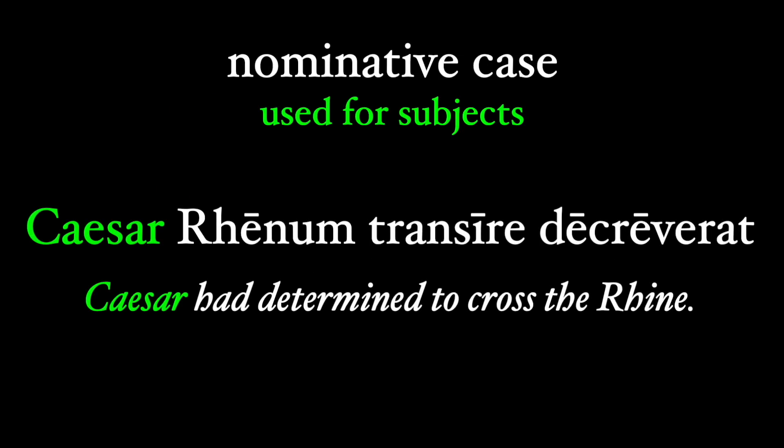Here's an example from the Gallic War. Caesar Rhenum transire decreverat. Caesar had determined to cross the Rhine. Caesar is in the nominative case because it's the subject of the verb decreverat.